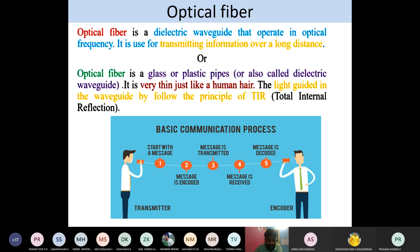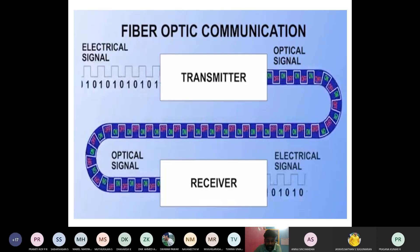The optical fiber is also called a waveguide because it guides, carries, and communicates information from one place to another. From the structure, we learn how optical fiber works and what its purpose is. The information is communicated from one end to the other.